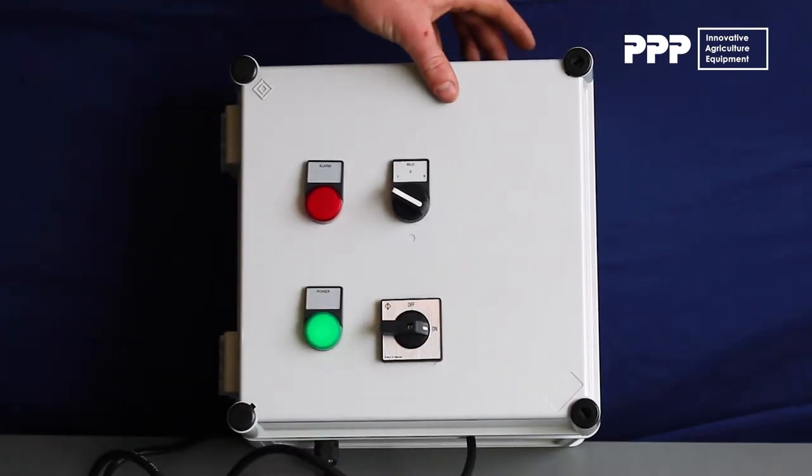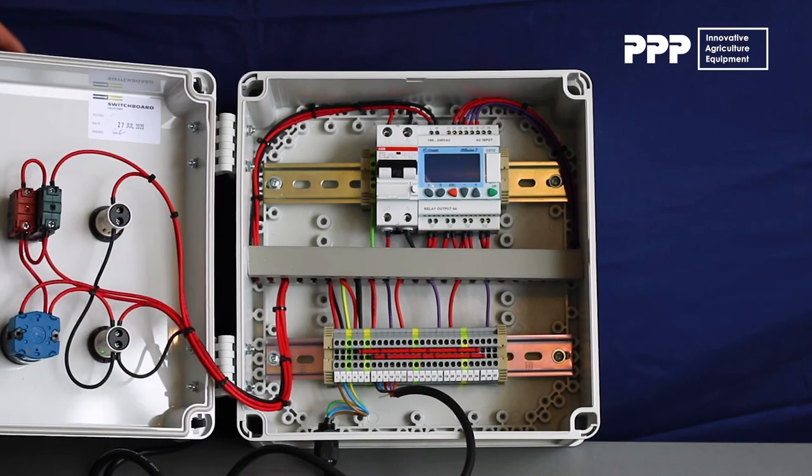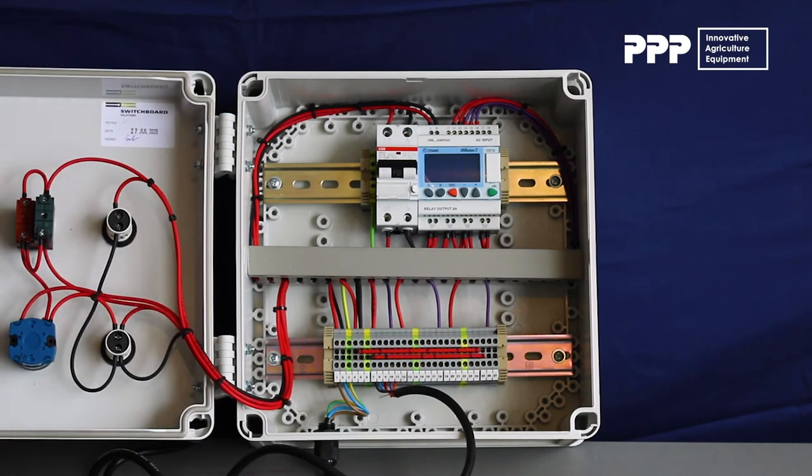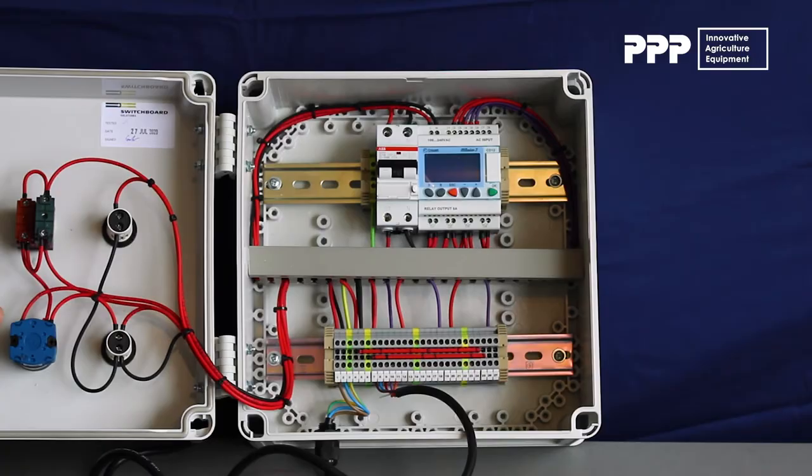All of PPP's control boxes come with a standard 59 second run period and a five second rest time. I'll show you how to change that.